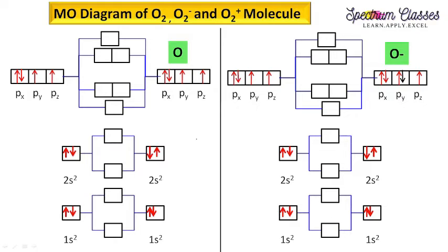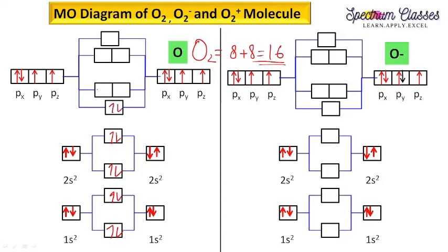Now, filling the electrons. For oxygen molecule, we are having 8 plus 8 equal to 16 electrons in total. I need to fill the 16 electrons in these molecular orbitals — counting 1 through 16.